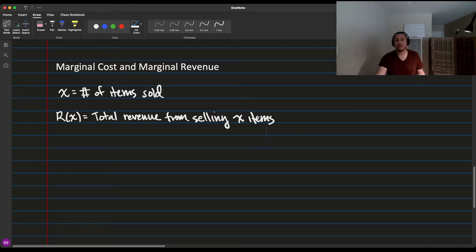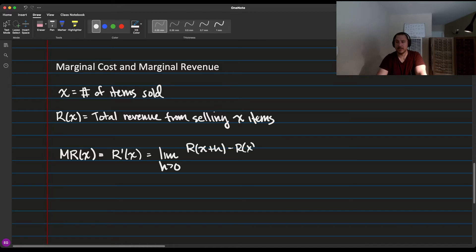As you sell more items, what should happen to the total revenue as X increases? Yeah, it should increase also. Now, there's something called marginal revenue. Marginal revenue equals the derivative of revenue, which is the limit as H goes to zero of R(X+H) minus R(X) all over H.